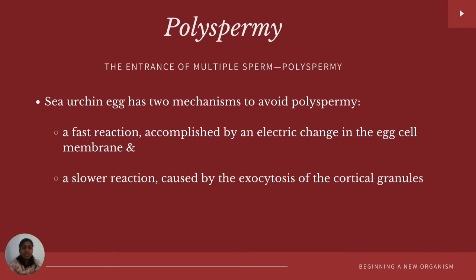Polyspermy refers to the entrance of multiple sperms into an egg. In sea urchins there are two mechanisms to avoid polyspermy: one is a fast reaction accomplished by an electrical change in the egg cell membrane, and the other is a slow reaction caused by the exocytosis of cortical granules.